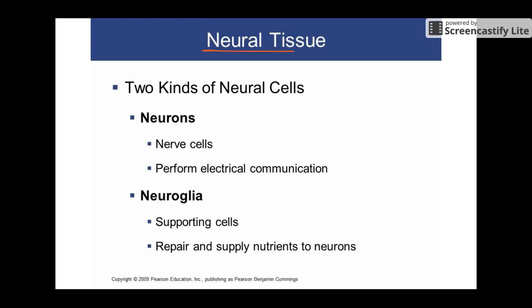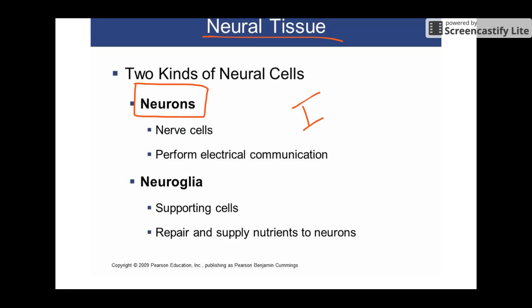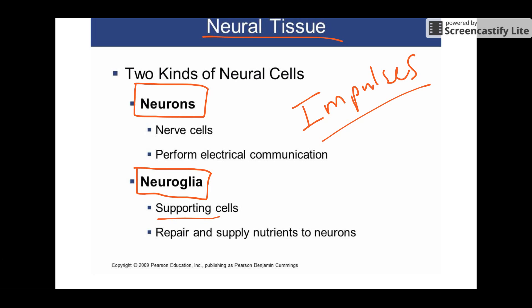And our last tissue is nervous tissue, or neural tissue — you'll see it both ways. There are two types of cells in there. You've got your neurons, which actually perform electrical communication — they send impulses, which are electrical waves sent throughout the body. The other cells are the neural glia, which are the supporting cells. They support the neurons, hold them together, and maintain the chemical environment around them — the general caretakers of the neurons so the neurons can do their job. The neurons control all your muscle contractions, all your senses, and everything vital to your body.